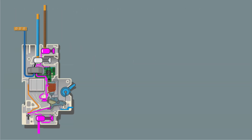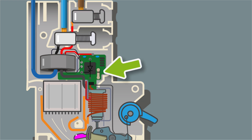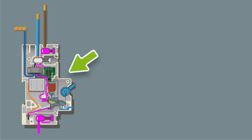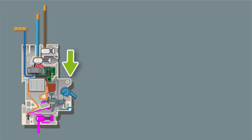Here we can see an RCBO operating as it should. Power's going through the device. The trip coil has sensed an issue, sends power onto the thyristor, operates the solenoid, which opens the contacts, and the RCBO has tripped. You'll notice there's no power to the thyristor anymore. The sequence is: working, sensing, operating — that's how it should be.